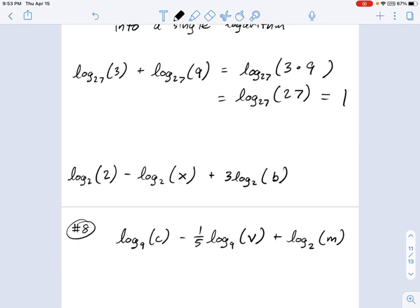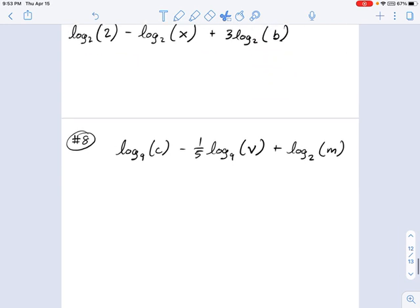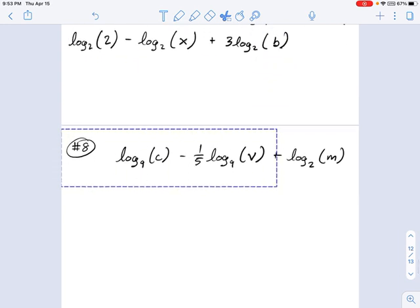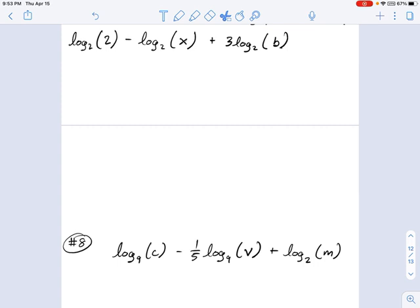So next one, let's take a look at this example right here. I've got log base 2 of 2 minus log base 2 of x plus 3 log base 2 of b, and I want to put this into a single logarithm. Now, you might be tempted to just say, well, log base 2 of 2, that's just 1, which is true, it is. But if we're told to put this all into a single logarithm, you might not want to put 1 right there. Let's just not for now, for argument's sake.